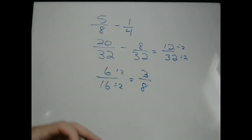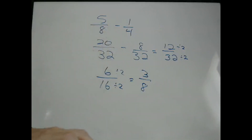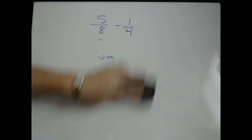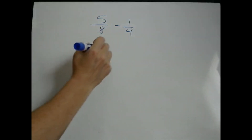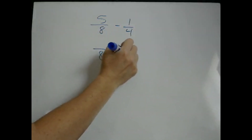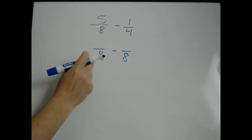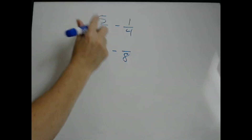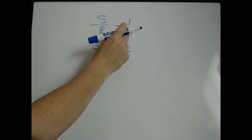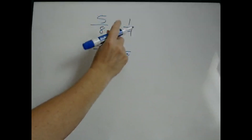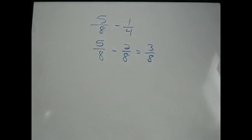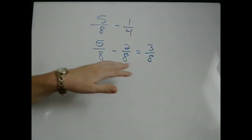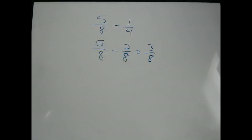Another way you could do this: if you immediately recognize that both 8 and 4 go into 8 evenly, you can make your common denominator 8. We multiply 8 times 1 to get 8, so we multiply 5 times 1. We multiply 4 times 2 to get 8, so we multiply 1 times 2. We get 3 eighths — the same answer. This was faster because we found the least common denominator rather than just a random common denominator.